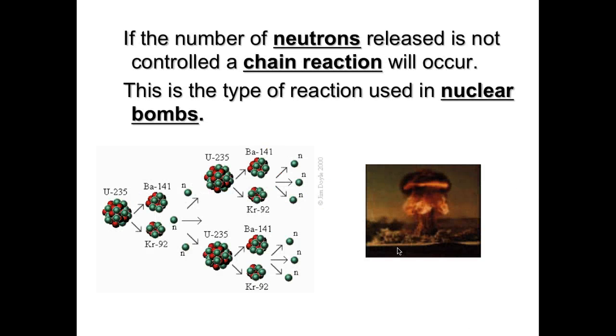If the number of neutrons released is not controlled, a chain reaction will occur, and this type of reaction is used in nuclear bombs. This uranium-235 split into two nucleus, but when it split, these three neutrons were released as well. They hit two more uranium-235s, and those nuclei split, and then neutrons were released, and that's a chain reaction. All these particles are going to be bumping into each other in a small confined space, and that's how we get the reaction in a nuclear bomb, like Fat Man and Little Boy, which were dropped on Hiroshima and Nagasaki during World War II.